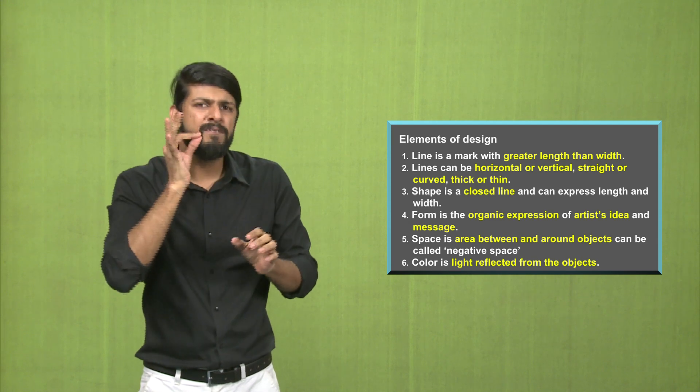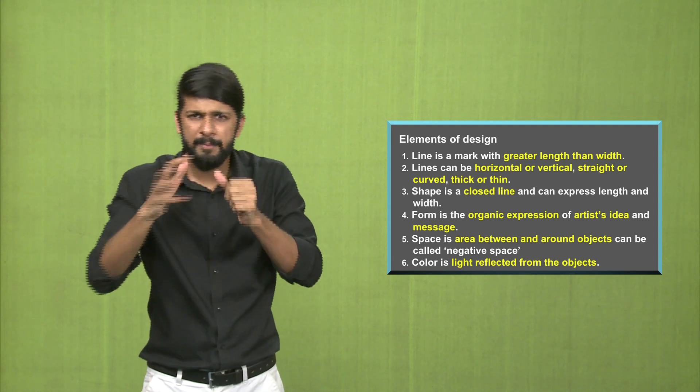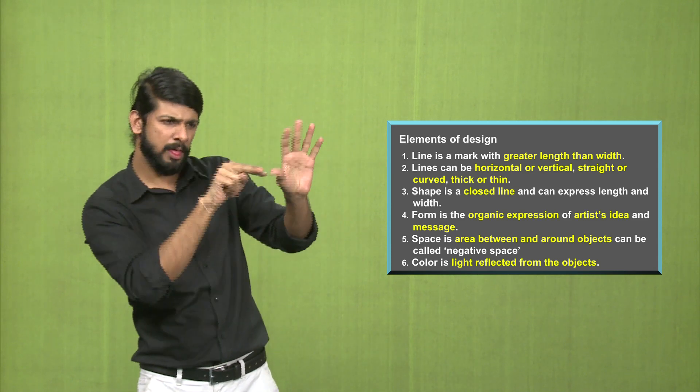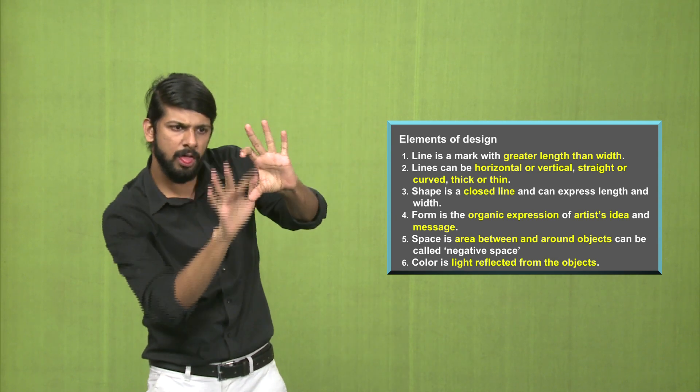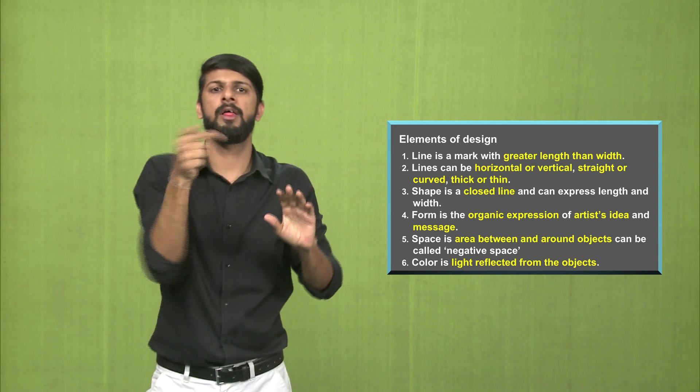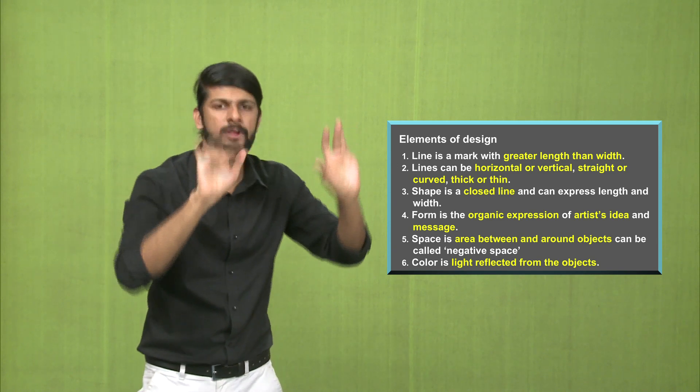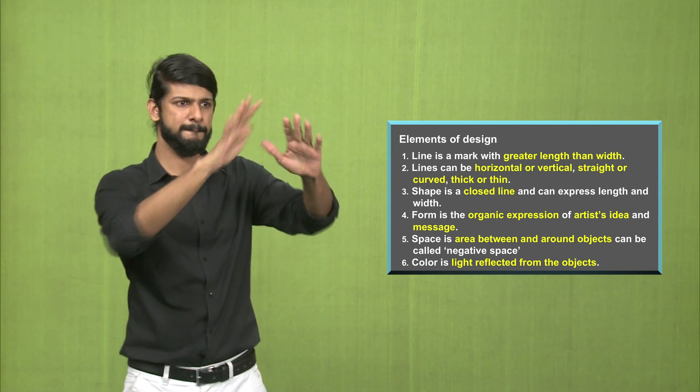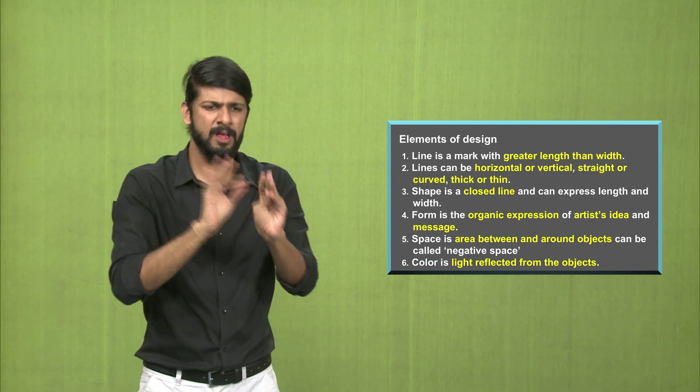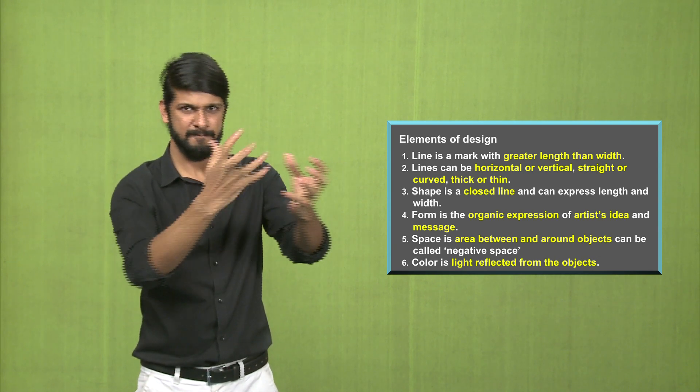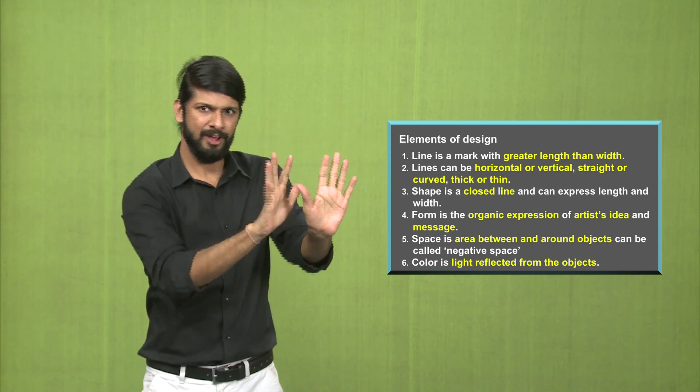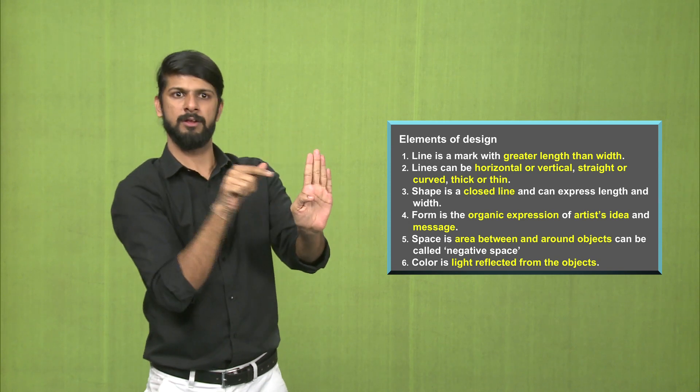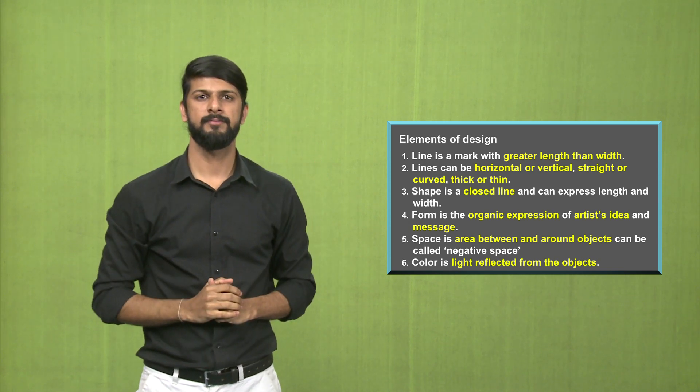Then we have space. Space is the area between and around objects. In a still life painting, if you have the fruits, you have a triangular shaped object, in between these objects there would be space, which is called the negative space. Then we have color. Using the same example of a still life composition, you have fruits, various kind of fruits. Then the light which is reflected on these models or these objects is reflected, and you can see the play of light and shadow.